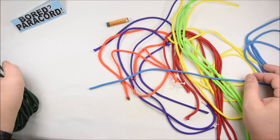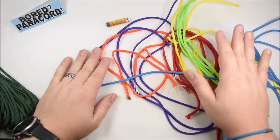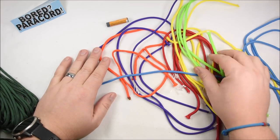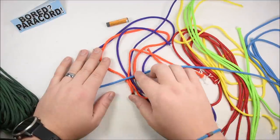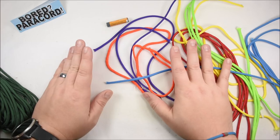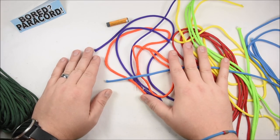So the first thing we're going to do, I have one, two, three, four, one, two, three, four. I have six colors, four strands of each color for a total of 24.